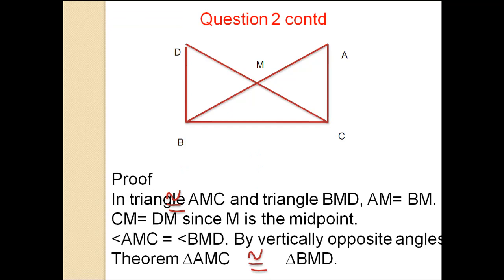Proof. In triangle AMC and triangle BMD, AM equals BM since M is the midpoint. CM equals DM. Angle AMC equals angle BMD by vertically opposite angles theorem. Therefore triangle AMC is congruent to triangle BMD.